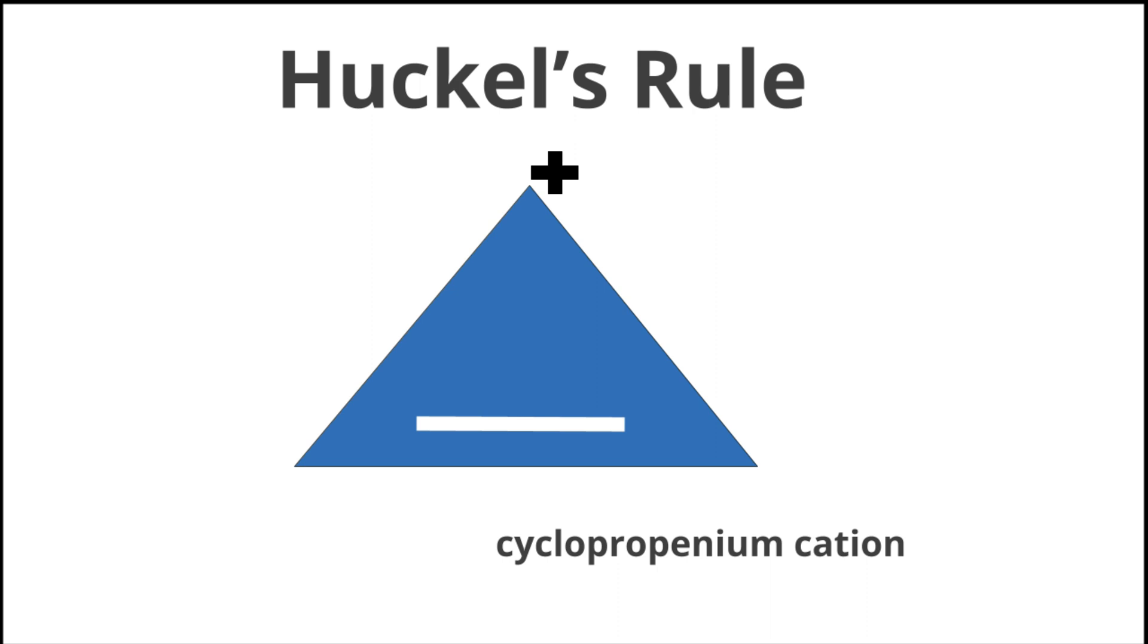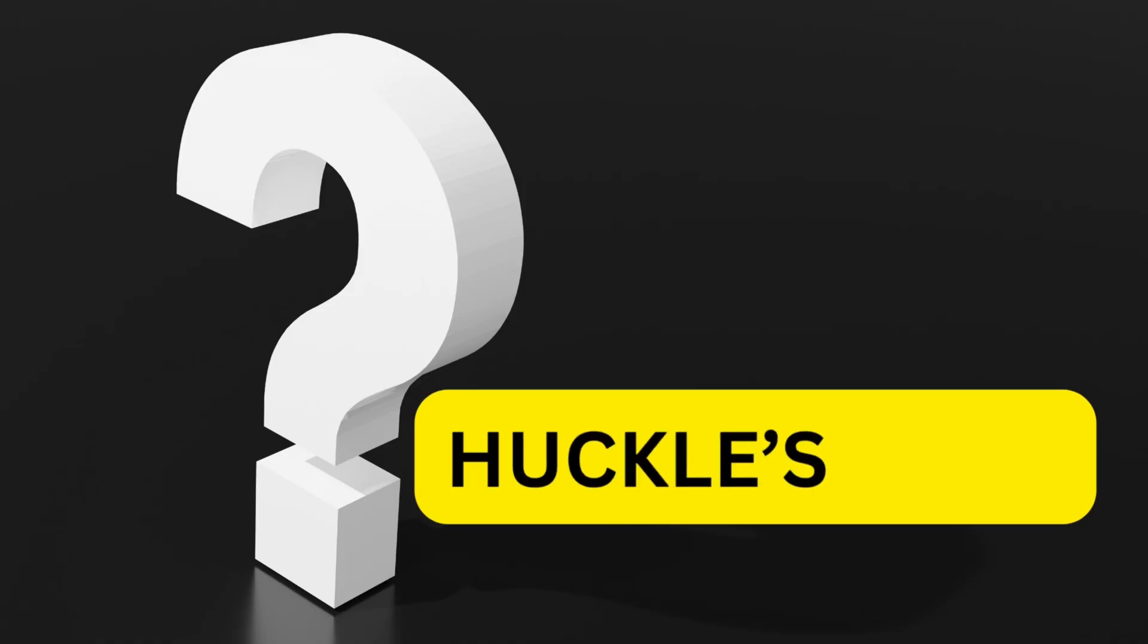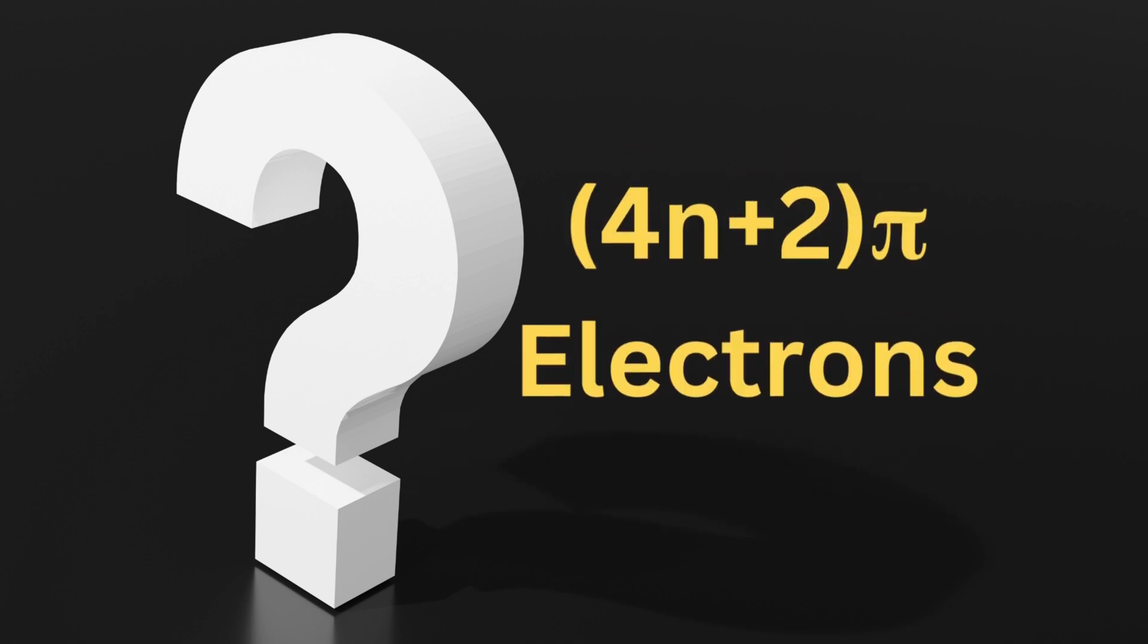First, let us see what is Huckel's rule. Huckel's rule helps to know that certain compounds are aromatic or non-aromatic. According to Huckel's rule, if there is the presence of 4n plus 2 pi electrons, then the compound is aromatic.